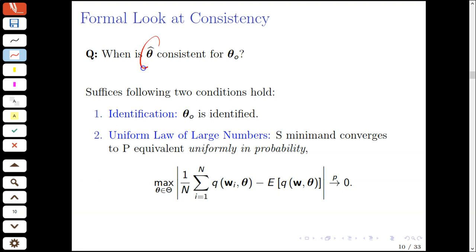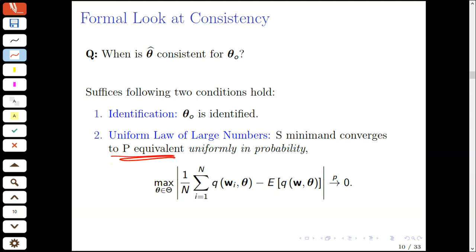We now take a formal look at consistency — when is the sequence of M-estimators consistent for the M-estimate? It turns out that two conditions are sufficient. The first condition is that the M-estimate, or true parameter, is identified. The second, more complicated condition, states that the sample criterion function converges to the population criterion function, where this convergence is uniform in probability.